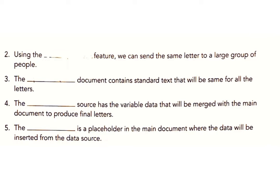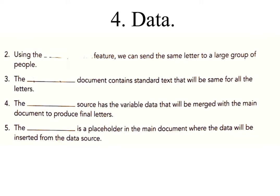The main document contains standard text that will be the same for all the letters. Answer: Main document. The data source has the variable data that will be merged with the main document to produce the final letters. Answer: Data source.